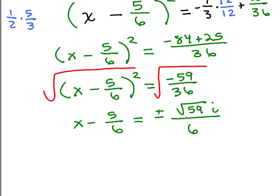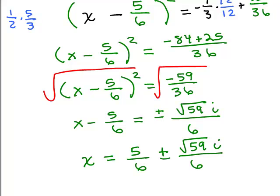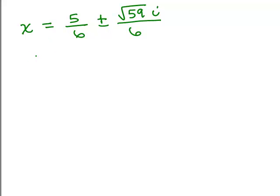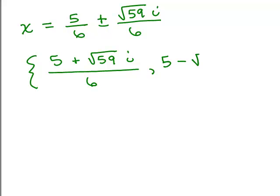Almost done. So this gives me two separate equations, but before splitting it up in two separate equations, I'm just going to add 5 sixths to both sides, so I get x equals 5 sixths plus or minus the square root of 59i over 6. So this gives you two solutions. We have 5 plus the square root of 59i. Now, make sure you don't put the i under the square root. Some people put the i in front of the square root, which is also fine, all over 6, and then we have 5 minus the square root of 59i all over 6.